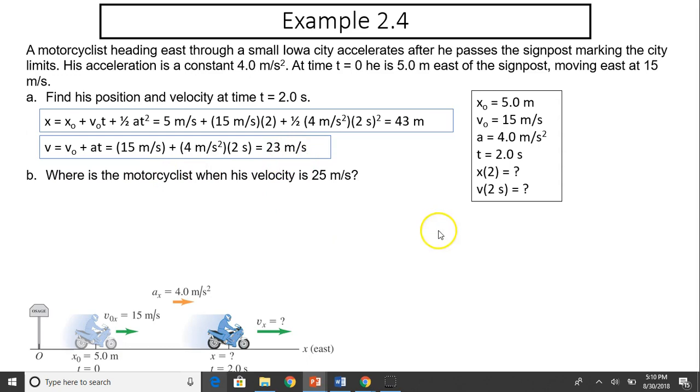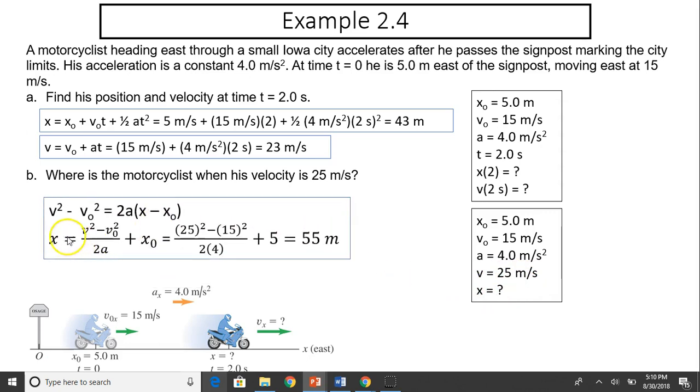Where is the motorist when his velocity is 25 meters per second? Again, you write down what is given. It's the same as part 1, except in this part when v is 25 meters per second, where is his position? You need to choose another equation. v squared minus v0 squared equals 2a times x minus x0. This is displacement. You solve for x, and you should have 55 meters.